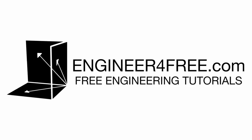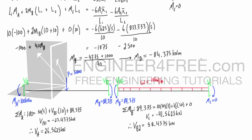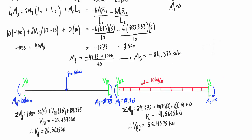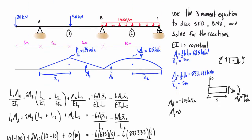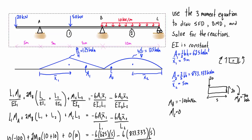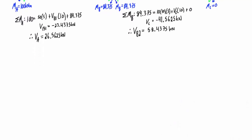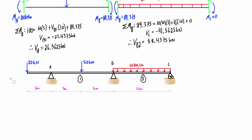Welcome back — this is Part 2 of Example 1 for the three-moment equation, picking up right where we left off. We had just calculated the internal shears and end moments of each span, and now we want to draw the shear force diagram and bending moment diagram and then solve for the reactions. Let's grab a picture of our original drawing and get the diagrams set up.